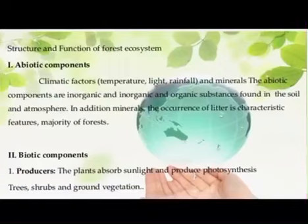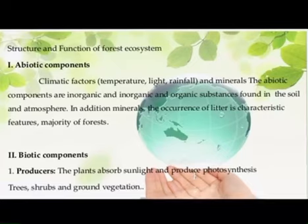Producers are mainly trees that show much species diversity and a greater degree of stratification, especially in tropical moist deciduous forests. The trees are of different kinds depending upon the kind of forest formation developing in that climate. Besides trees, there are also shrubs and ground vegetation. The dominant producers in these forests include trees such as Tectona grandis, Butea frondosa, Shorea robusta, and Lagerstroemia parviflora.